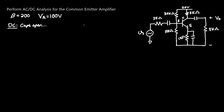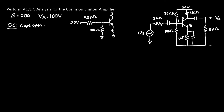We rotate the 30 kΩ resistor counter-clockwise 90 degrees with the 20 V source. We have our 30 kΩ resistor, and now we must consider the 10 kΩ resistor going to ground. This will affect the KVL loop we take. We also have the collector, but we don't need to worry about that yet.